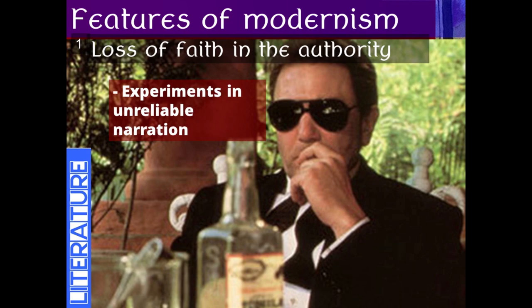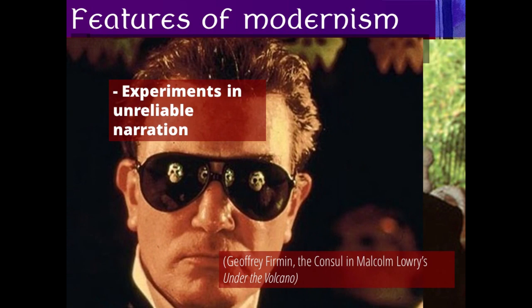A good example is Under the Volcano, a magnificent novel by Malcolm Lowry, where the protagonist Geoffrey Firmin — Consul in Mexico — goes through the whole day of the novel in a state of total intoxication. He is completely drunk, yet brilliant, sparkling, and genial. Other experiments in unreliable narration include Faulkner's character who is a 33-year-old mentally disabled boy in The Sound and the Fury.